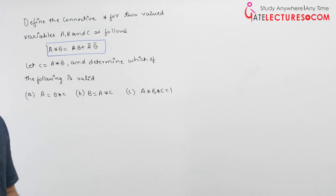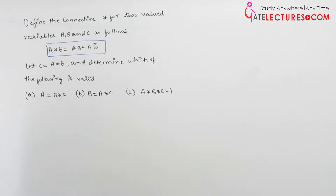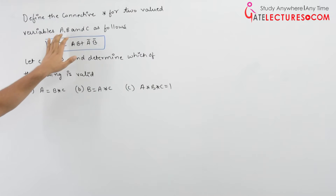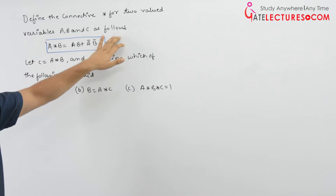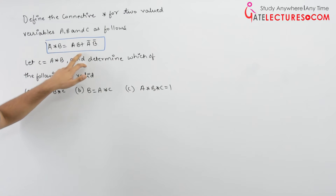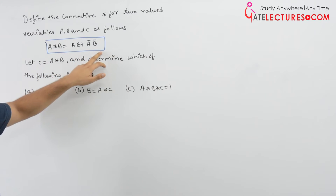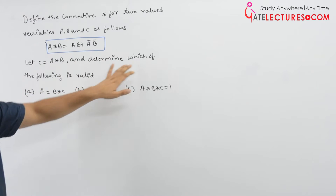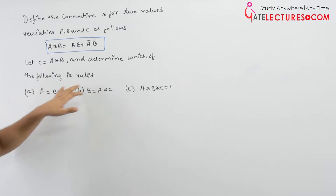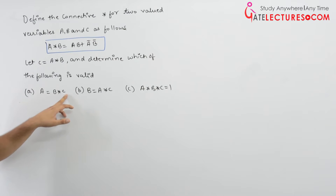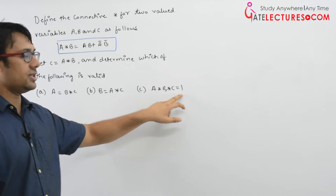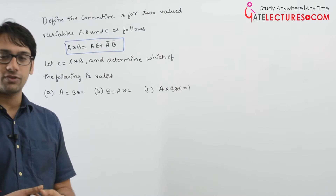Let us look at this question. They define the connective star for two-valued variables A, B and C as follows: A★B = AB + A'B', and C = A★B. We need to determine which of the following is valid: (1) A = B★C, (2) B = A★C, (3) A★B★C = 1.